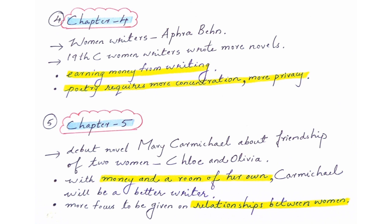In chapter 5, the narrator looks at recent women writers of her period. She reads a debut novel about the friendship between two women named Chloe and Olivia. This is very refreshing for the narrator because until now, books about women were written by men and focused on women's relationships with men — as mothers, as wives. A female friendship perspective was entirely new. She says there are countless untold stories about women from women's perspectives, because we have always seen women through the eyes of men and never through the eyes of a woman. For those stories to be told, she again stresses: a woman needs money and a room, privacy of her own.